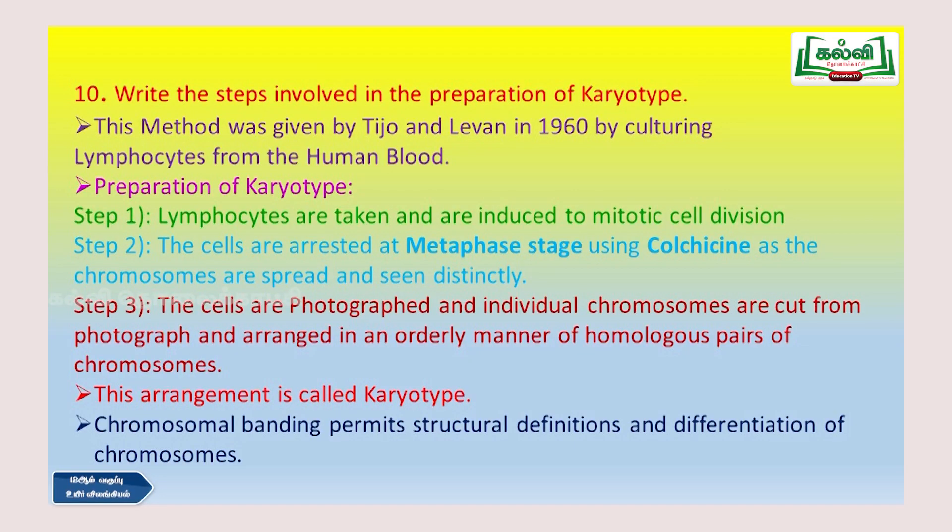Hello children. Today we have seen some 3-mark and 2-mark questions. Now let us continue with the 3-mark questions once again. In this episode we are going to study the 10th question: Write the steps involved in the preparation of karyotype.